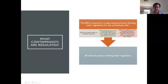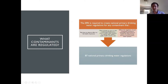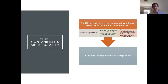In terms of making a determination whether to regulate a contaminant, EPA is required to create national primary drinking water regulations for contaminants meeting three basic criteria: they must have an adverse impact on the health of persons; they must be known or substantially likely to occur in public water systems in a manner that presents a hazard to public health; and there must be a meaningful opportunity for health risk reduction. Those are the criteria EPA uses under the Safe Drinking Water Act to determine what contaminants are regulated.